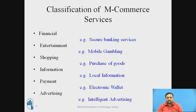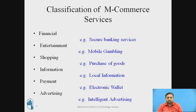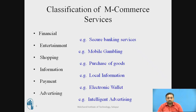The second category is entertainment, which includes mobile gambling, various games, and movie ticketing. The third category is shopping — the purchasing of goods on various retailer shops like Big Bazaar and D-Mart through M-commerce. The fourth is the information category, where you can access information spread across the world through M-commerce, such as paying for a book and receiving a soft copy of it.